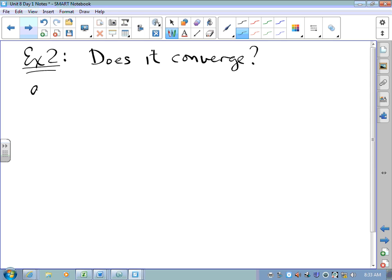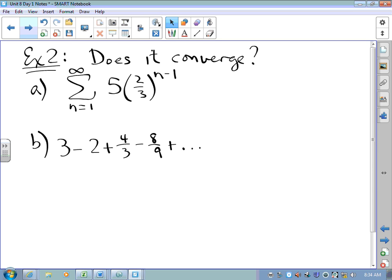So, we'll play everybody's favorite game. Does it converge? Does it converge? Got a couple of contestants for you. The sum as n goes from 1 to infinity of 5 times 2 thirds to the n minus 1 and 3 minus 2 plus 4 thirds minus 8 ninths plus and so on.